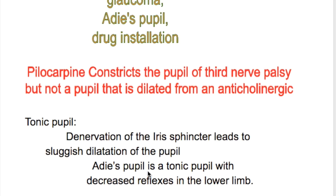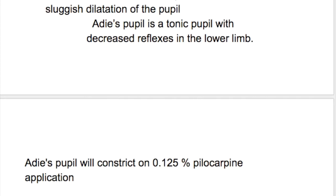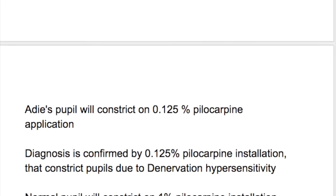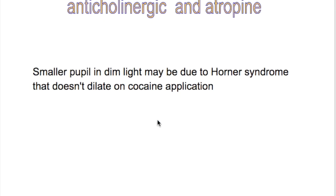A tonic pupil results from denervation of the iris sphincter, leading to sluggish dilatation. Adie's pupil is a tonic pupil with decreased reflexes in the lower limb. The diagnosis of Adie's pupil is confirmed by instillation of 0.125% pilocarpine, which constricts the Adie's pupil due to denervation hypersensitivity - at this concentration, it does not constrict a normal pupil. A normal pupil constricts with 1% pilocarpine, whereas a drug-induced dilated pupil will not constrict on pilocarpine, indicating topical anticholinergic application.